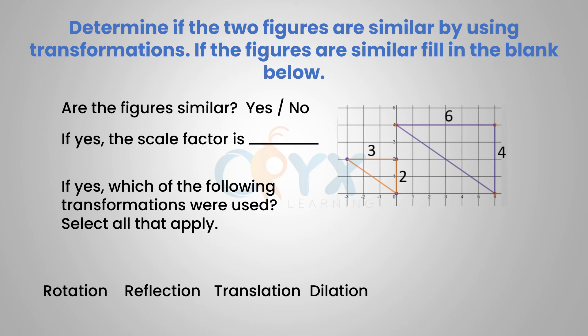Comparing the heights and comparing the bases, we can set up ratios of 6 over 3, which reduces to 2 over 1 or 2, and 4 over 2, which also reduces to 2 over 1 or 2. Because both of them simplify to 2, the figures are similar and the scale factor is 2.